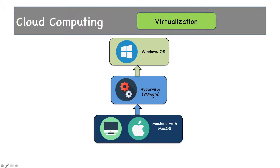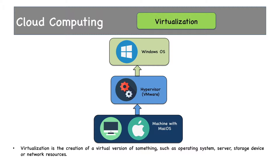A hypervisor is a technology used to create a virtualized environment — in our case, virtualized CPU, RAM, and storage, because the Windows OS needs to store the operating system itself along with data. So virtualization is the creation of a virtual version of something such as an operating system, server, storage device, or network resources. Everything can be virtualized. We've saved ourselves from buying a new computer by just creating this virtualized environment.